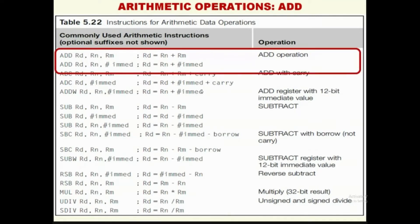In Table 5.22, starting with the ADD operation: RD denotes the destination register, RN is the first source register, and RM is the second register. So RN + RM is loaded into the destination register RD, meaning RD = RN + RM. Similarly, ADD RD, RN, #immediate means the destination register will have the sum of RN plus the immediate constant.